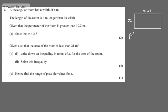So an expression for the perimeter would be 2 lots of x plus 4 plus 2 lots of x. We can now say that 2(x+4) + 2x is greater than 19.2. Expanding the brackets, we'll have 2x plus 8 plus 2x is greater than 19.2.